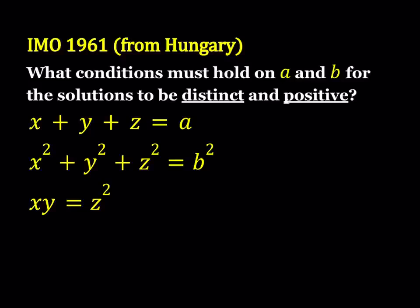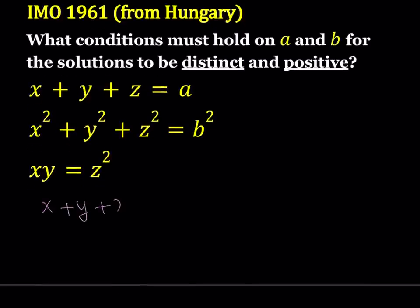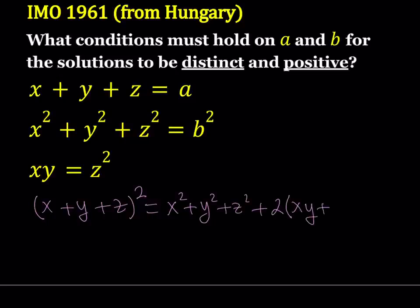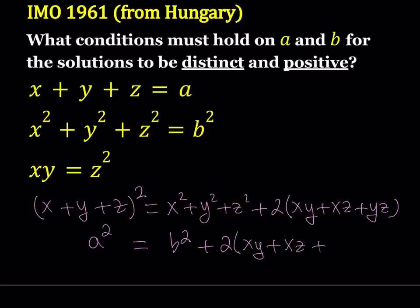We're going to be looking for conditions on A and B. A and B are given numbers and we want this system to have distinct and positive solutions, which means X, Y, Z are going to be all different values and also positive. We're going to manipulate this system, get solutions, and then look for conditions in the form of inequalities. We have the sum X+Y+Z=A, the sum of squares, and a product. So let's square X+Y+Z: we get X²+Y²+Z² plus 2(XY+XZ+YZ). This equals A², and the sum of squares is B².